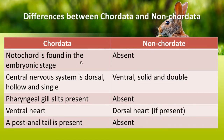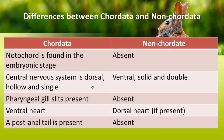Differences between Chordata and Non-chordata: In Chordata, the notochord is found in the embryonic stage and is replaced by the vertebral column in the adult. In Non-chordata, the notochord is absent. The central nervous system in Chordata is dorsal in position, hollow, and single. Whereas in Non-chordata, the central nervous system is ventral in position, solid, and double.